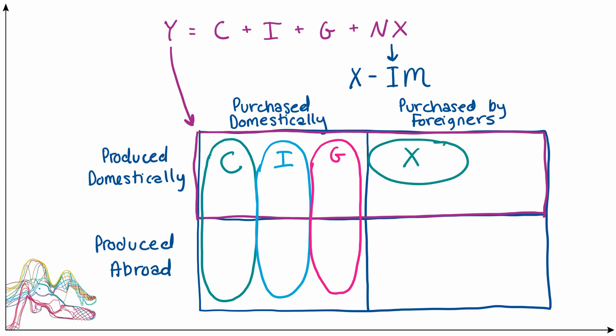Looking at what we have so far, it seems like we have a little bit of a problem because we want Y, or the aggregate expenditure on an economy's goods and services, to only count expenditure on things produced domestically, but then we have three of our categories bleeding over into this produced abroad part of our diagram.